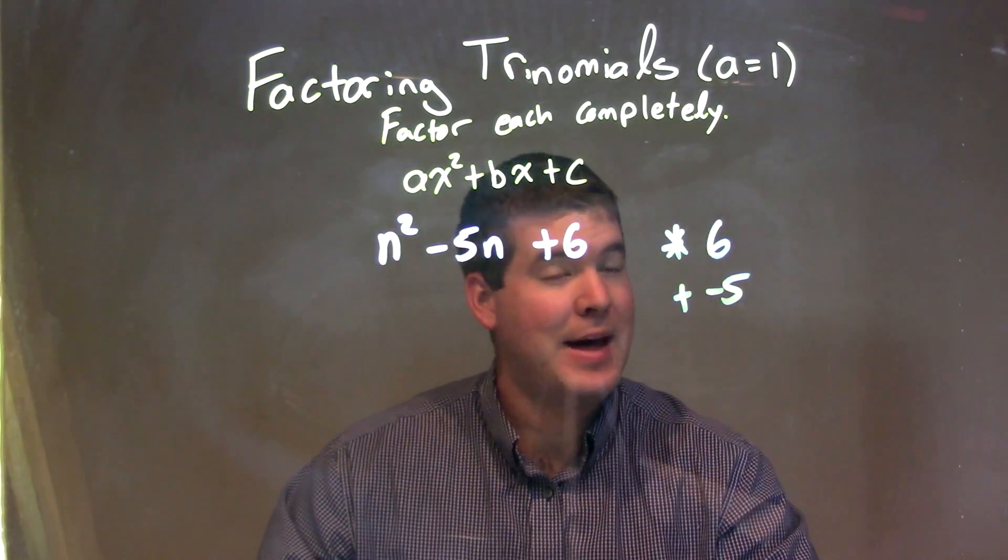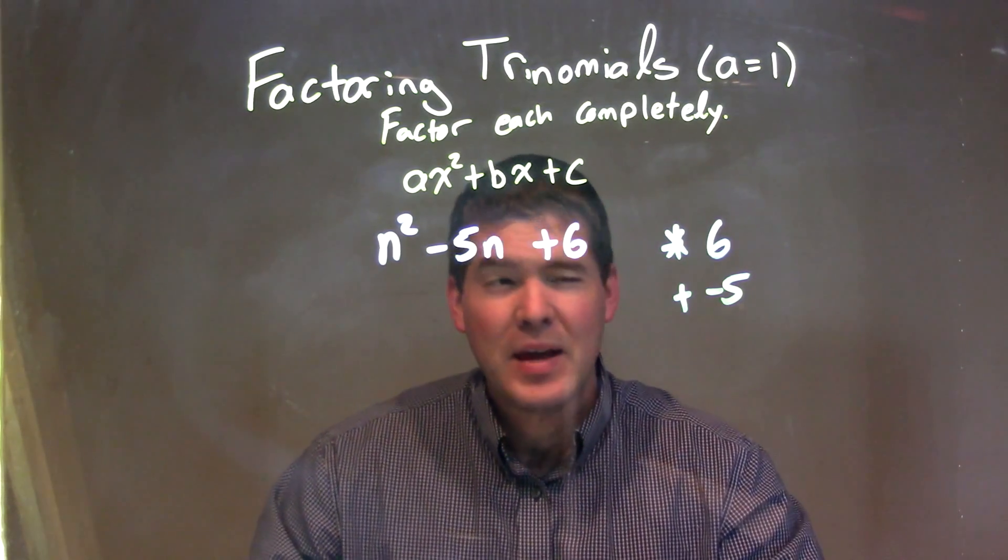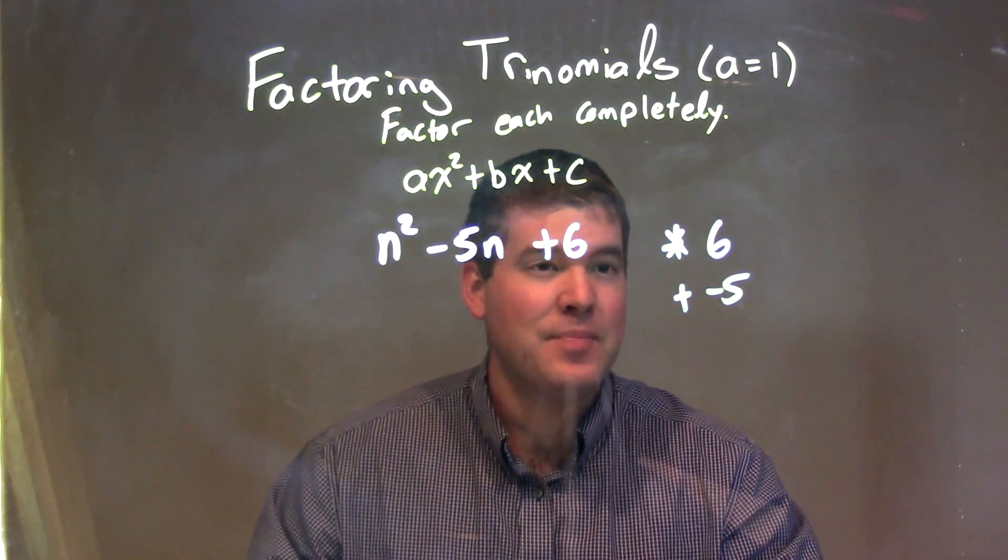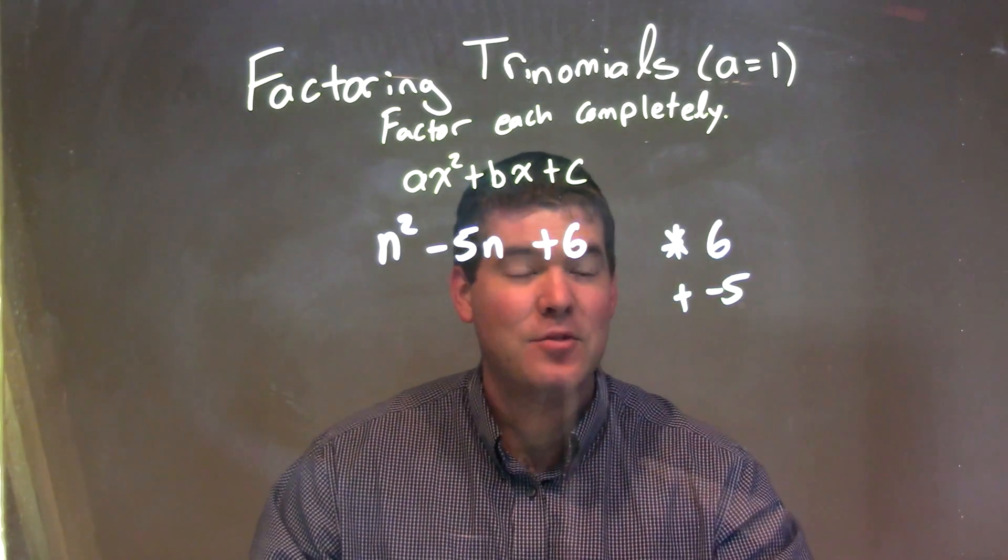What two numbers multiply to 6 but add to be negative 5? Well, I'm thinking 2 and 3, right? And both being actually negative: negative 2 and negative 3.